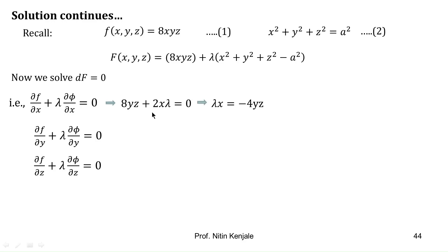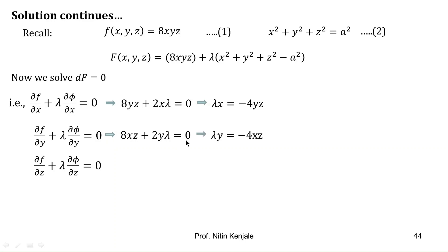From the first equation we get λx = -4yz. From the second equation, 8xz + 2λy = 0, which simplifies to λy = -4xz. Similarly, from the third equation, λz = -4xy. These are our Lagrange's equations.